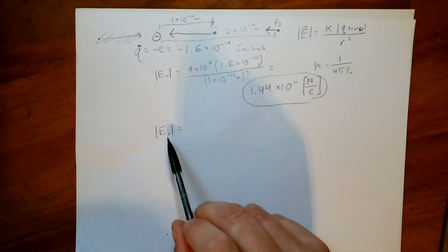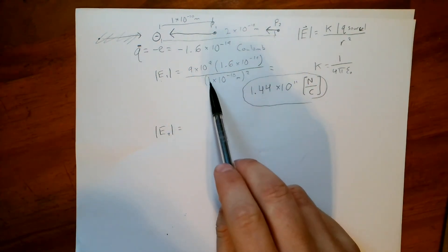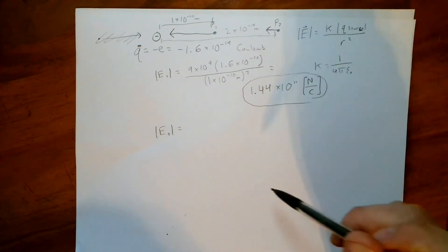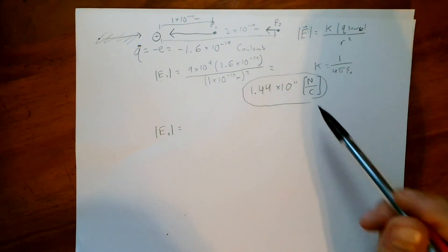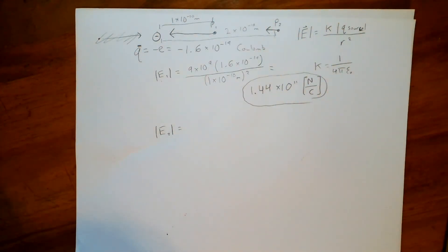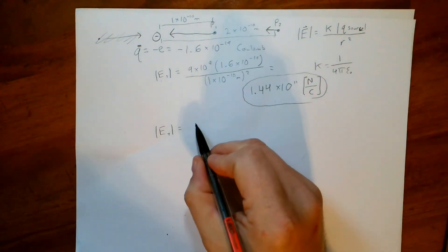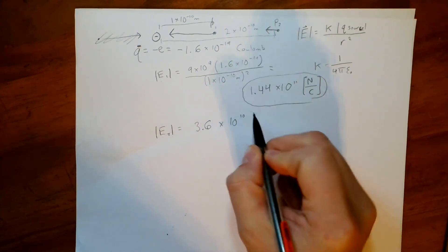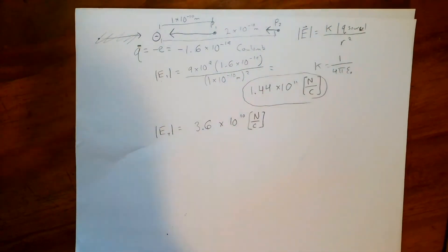To do this for two, we could do that whole formula again and increase this to two. But remember, if it's a one over r-squared relationship and I've doubled the distance, then it should just be four times smaller than this number. So let's just divide it by four. And now we got 3.6 times ten to the tenth power newtons per Coulomb. There you go.